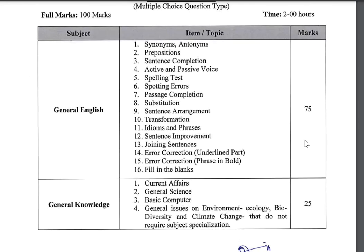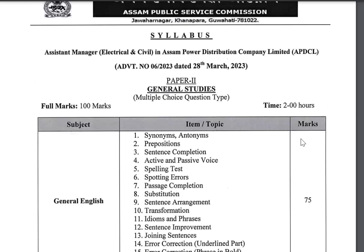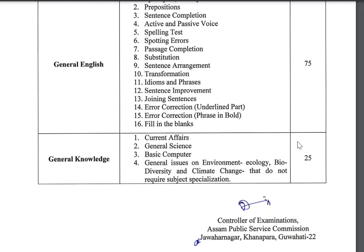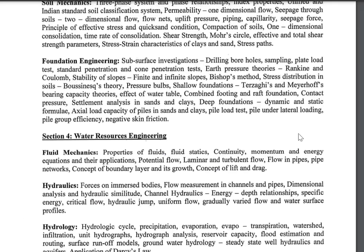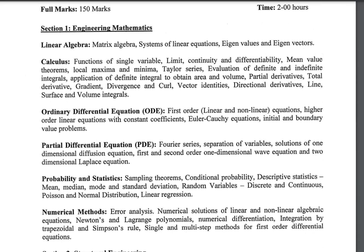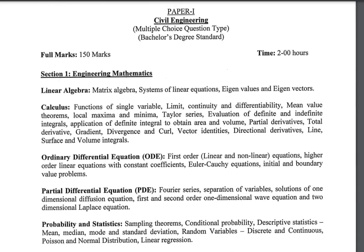The General English section carries 75 marks. For the APDCL Assistant Manager post, there is a paper with 100 marks for general studies and general English. The technical branch section, including engineering mathematics, carries 150 marks.